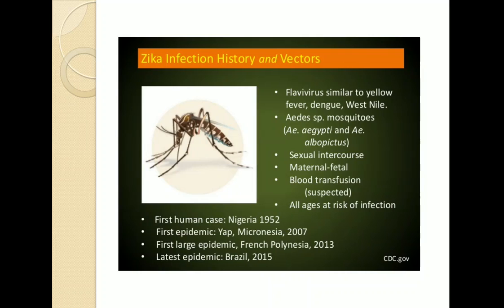Discussing its history: Zika flavivirus is similar to yellow fever, dengue, and West Nile. It is transmitted from one partner to another during intercourse, or from mother to baby during pregnancy or at the time of delivery, or during blood transfusion.